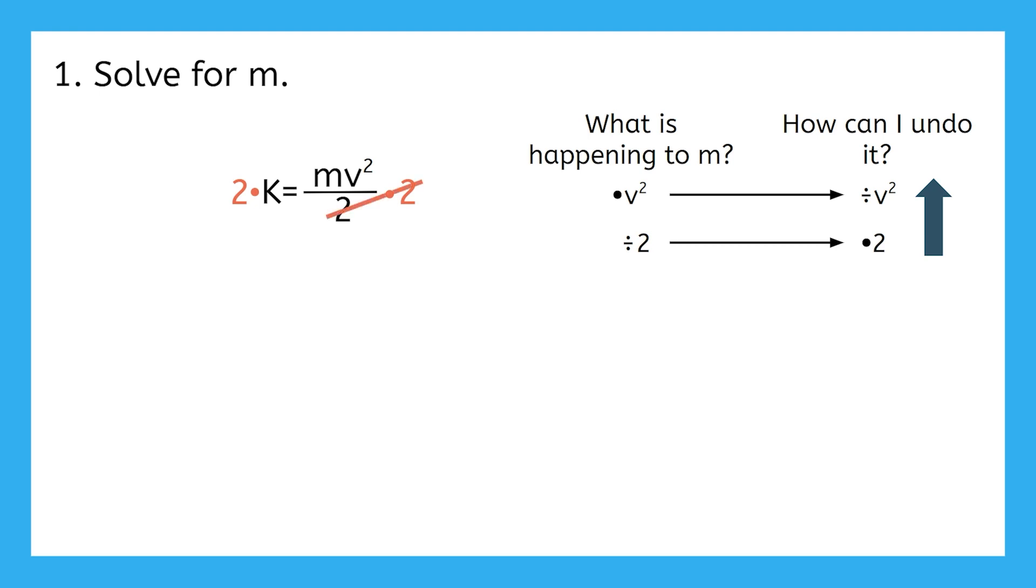On the right, the 2s cancel, leaving just MV squared. On the left, 2 times K makes 2K. Now it's time to get rid of that V squared.